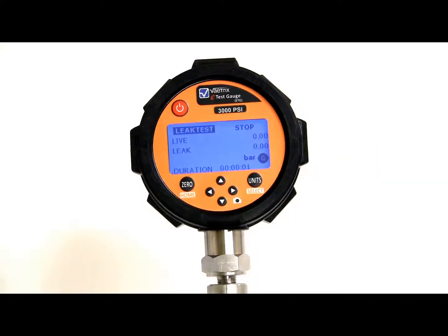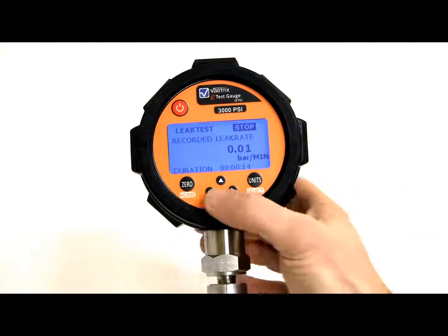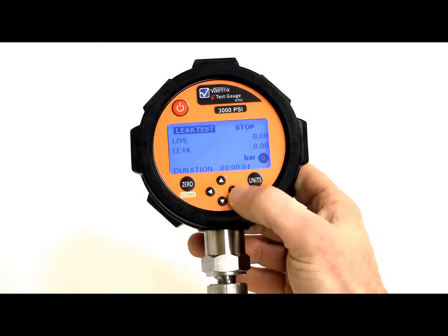So now I'm in live leak test mode. So leak test lets me check cylinders, tanks, anything that you want to check for a leak. You have to run it for 10 seconds, and it will tell you the leak rate. So I can scroll over, hit stop. It's going to tell me the leak rate in whatever units I'm in per minute. To do another test, I basically go right back, hit select, and you're starting again.